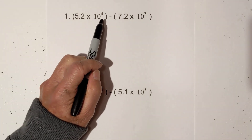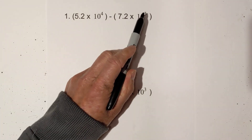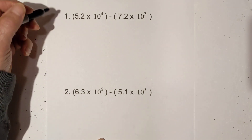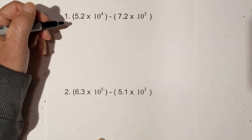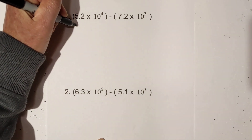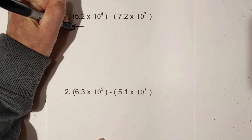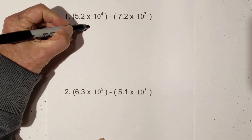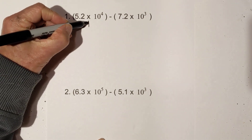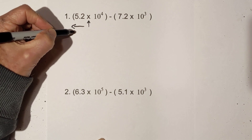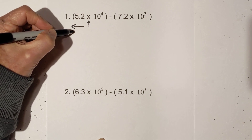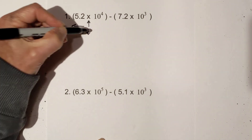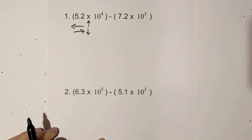Rule number one: in order to subtract, the exponents need to be the same. Rule number two: if you move the decimal to the left — in other words the number is getting smaller — the exponent gets larger. And if the number gets larger, then the exponent gets smaller.